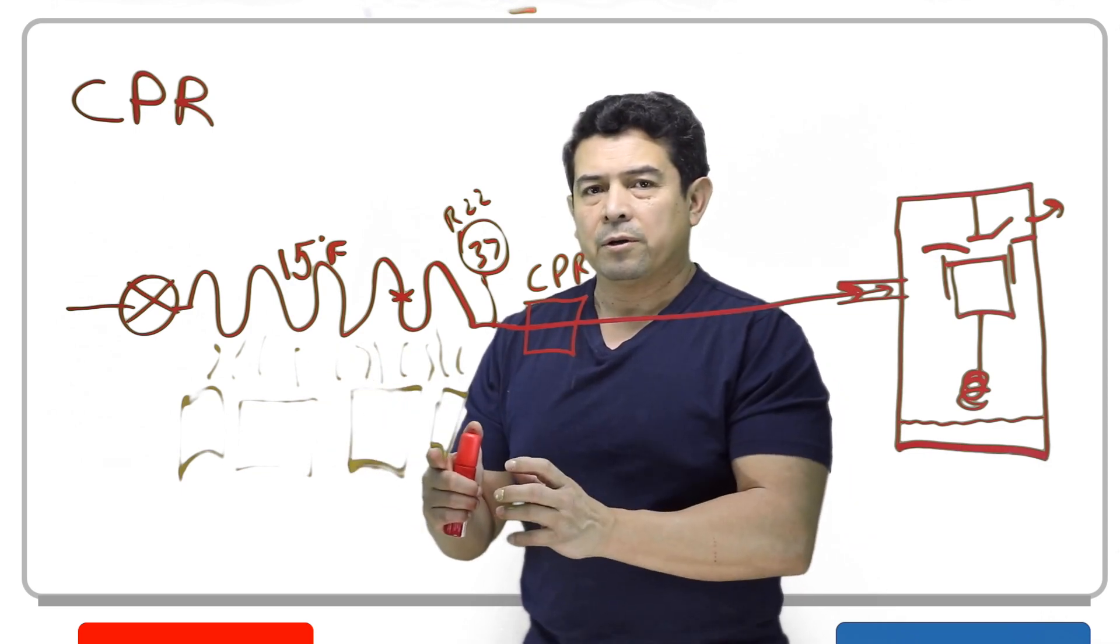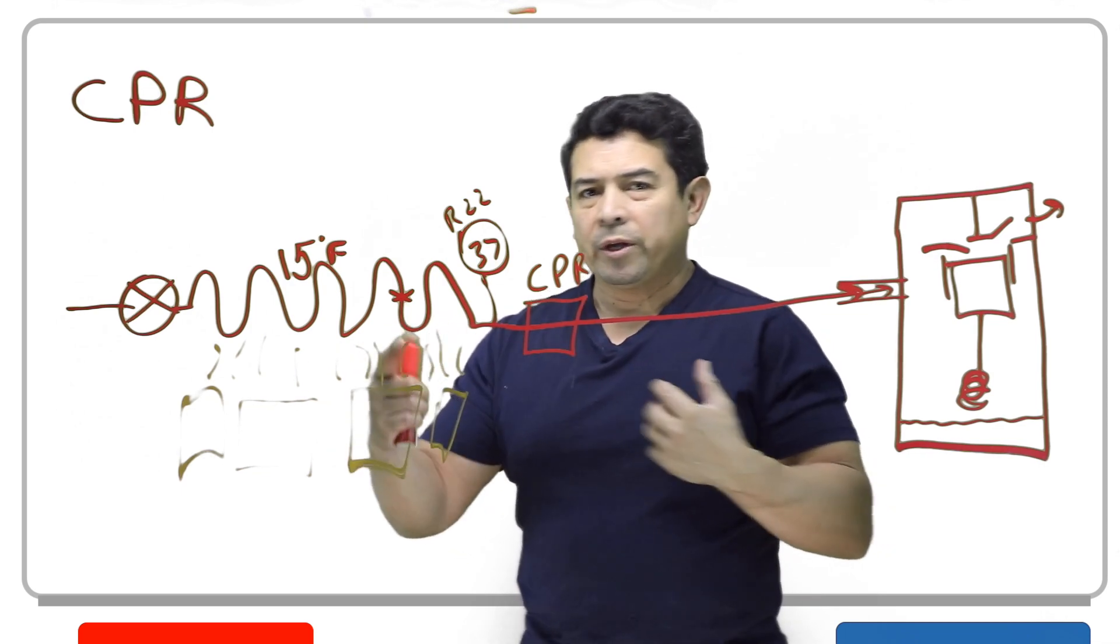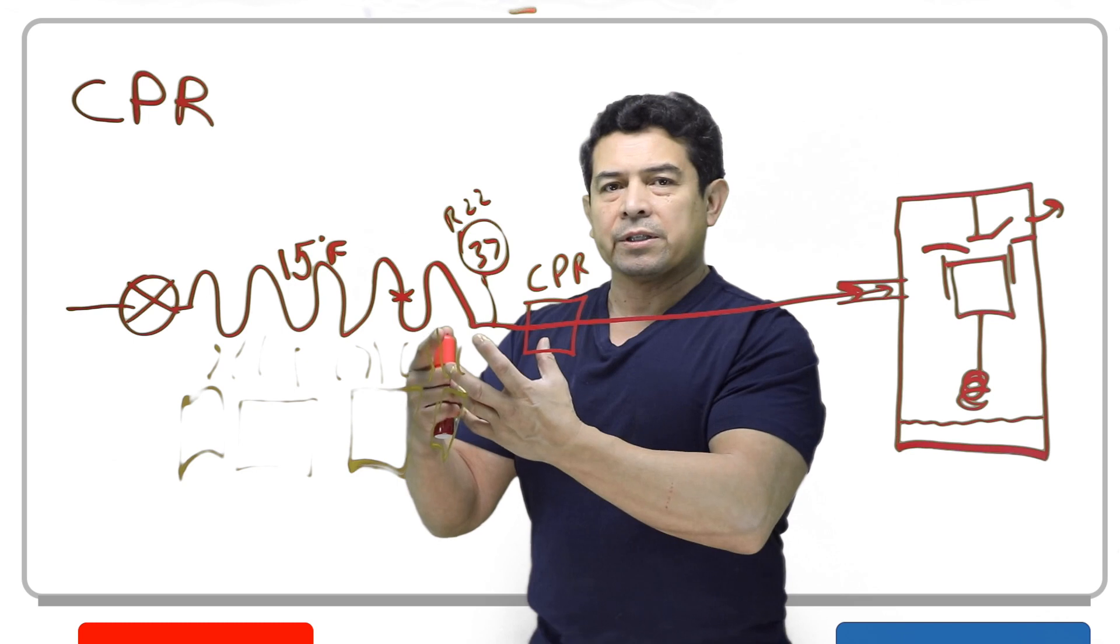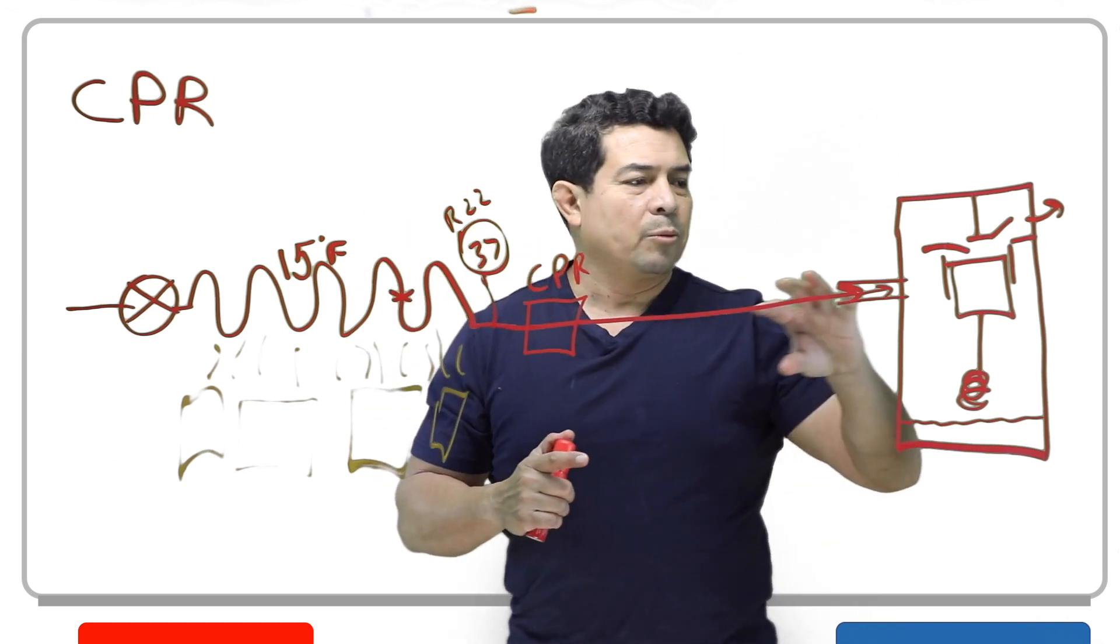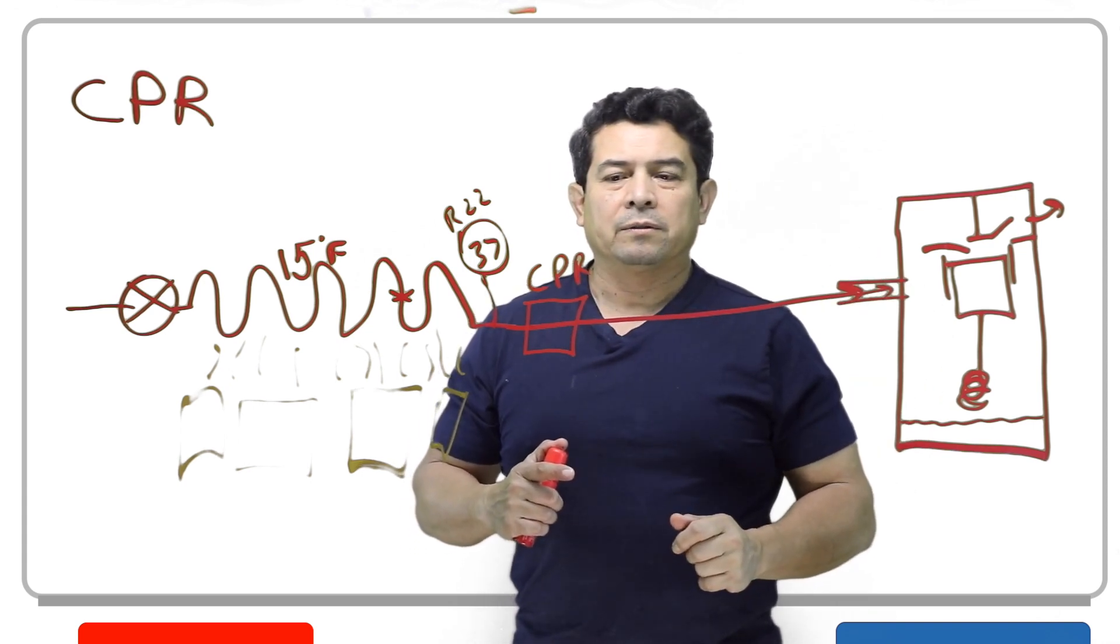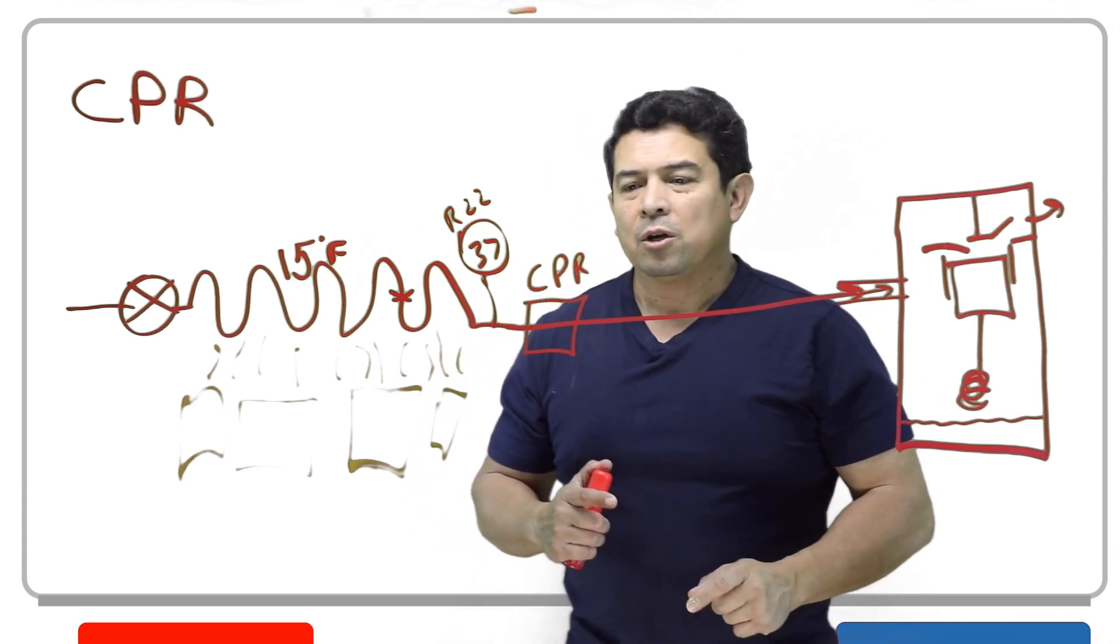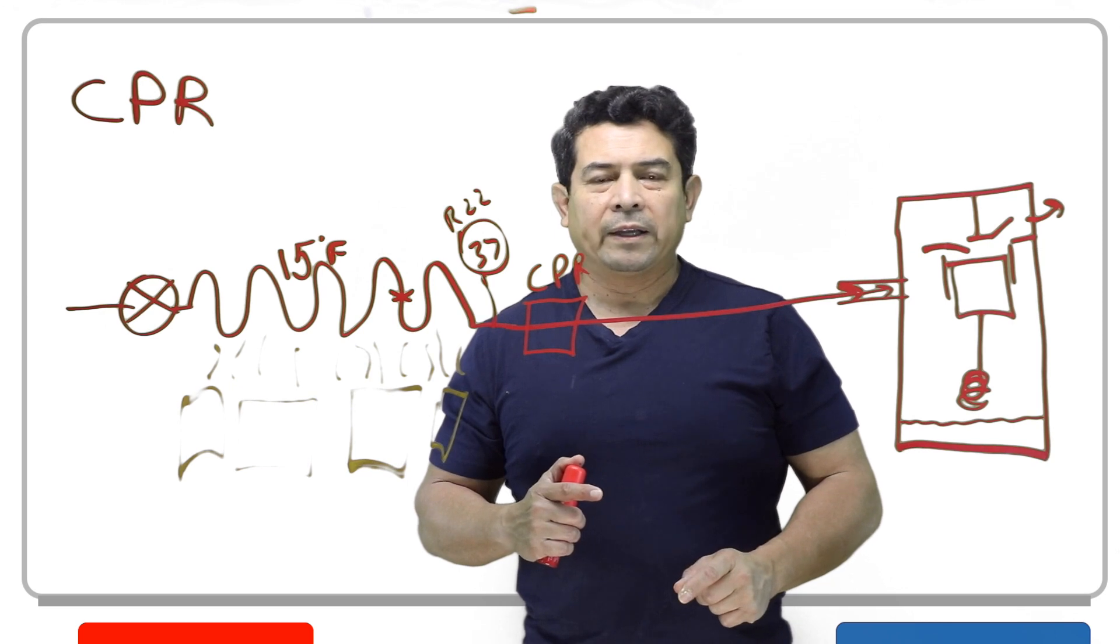This crankcase pressure regulating valve is going to keep that from happening. Once you put food in here, or you leave the door open, or for whatever reason, the load increases, the pressure will build up. This is going to make sure that the compressor is not overloaded. That's the purpose of your crankcase pressure regulating valve.